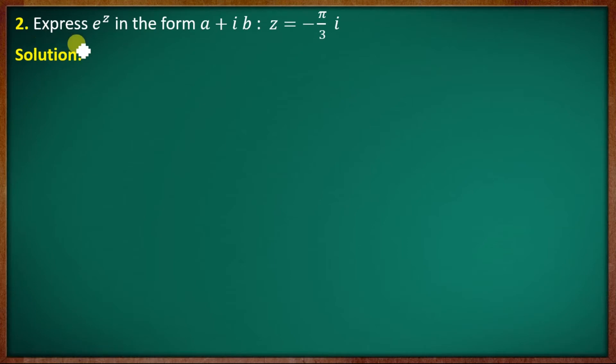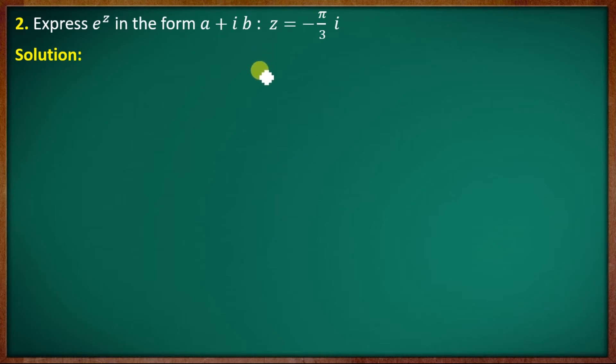Second question: express e raised to z in the form a + ib where z equals −5π/3 i.